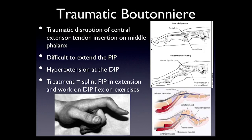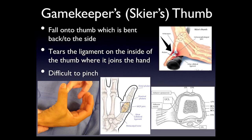A traumatic boutonniere is an odd mimic — it looks like a PIP or middle knuckle sprain, but it isn't. What happens is that you tear the attachment of the central slip, the part of the extensor tendon that allows you to pull your middle knuckle up. You still have supporting structures along the sides that allow you to extend the end knuckle. This creates the classic boutonniere deformity: flexion through the middle knuckle with hyperextension through the end knuckle. Unlike PIP sprains, these actually do need to be splinted — the middle knuckle is splinted in extension while you perform lateral band exercises, working on flexion of the hyperextended end knuckle.